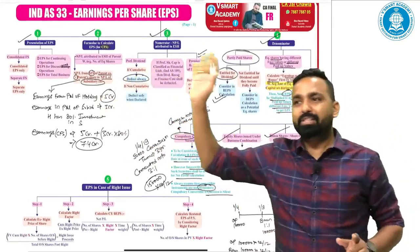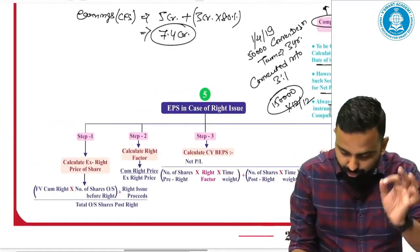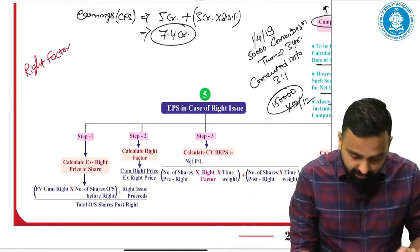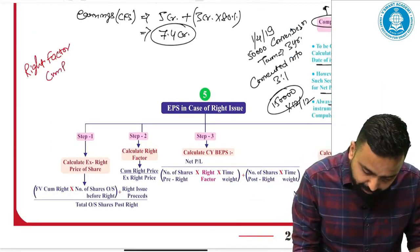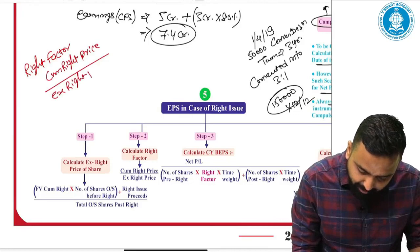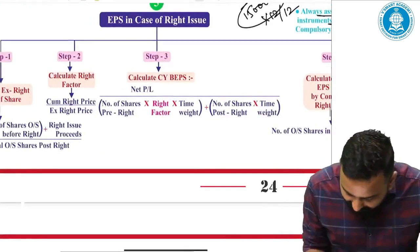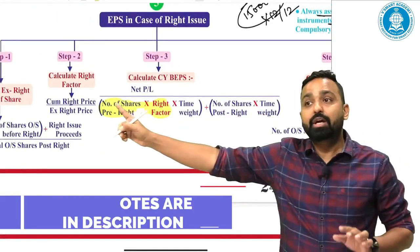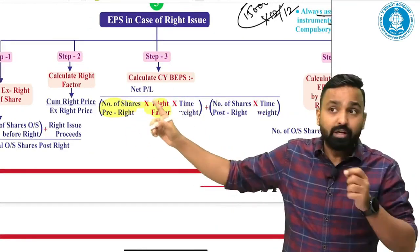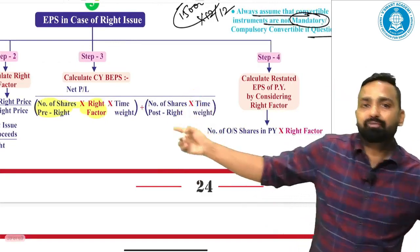In case of a right issue, just remember one word: right factor. Right factor = cum-right price divided by ex-right price. You need to multiply this right factor with the number of shares outstanding before the right issue for calculating basic EPS. Do not multiply with the number of shares after the right issue.